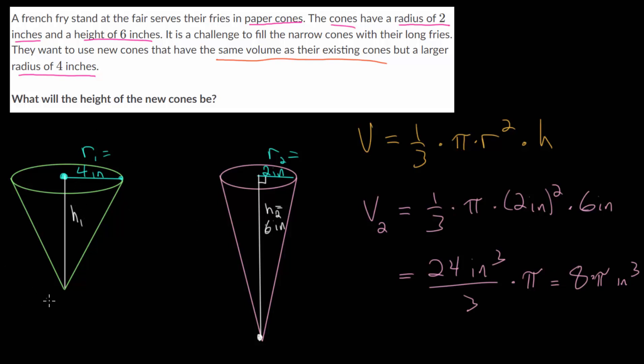We can say the volume of this cone, 8π cubic inches, is equal to one-third multiplied by π multiplied by the radius of this cone squared, which is 4 inches squared, multiplied by the height, which we called H1. This is what we need to solve for. Let's simplify everything and solve the equation for H1.